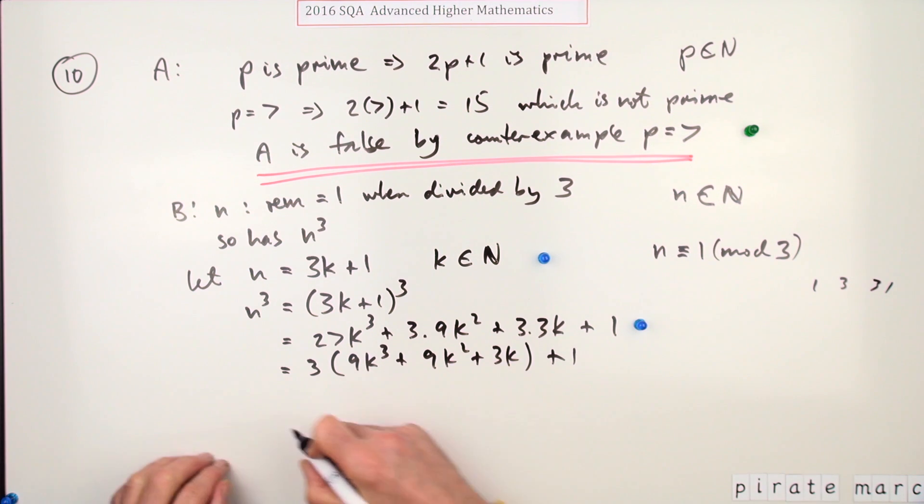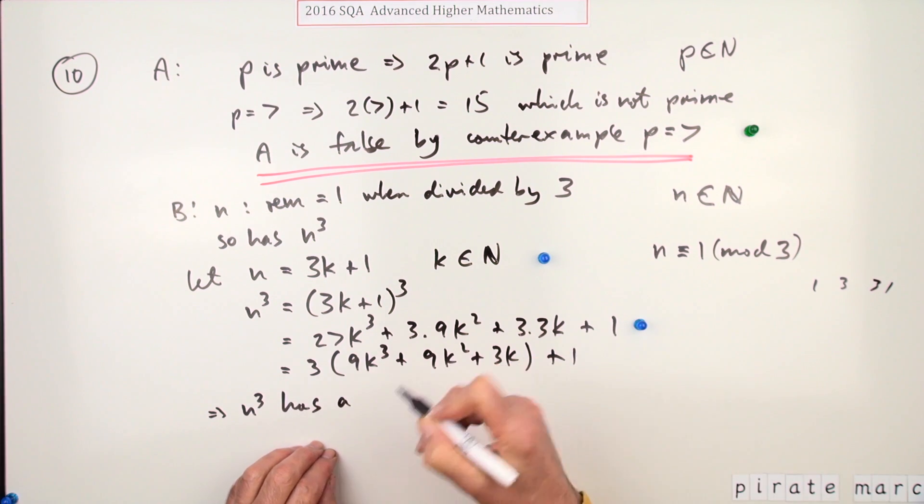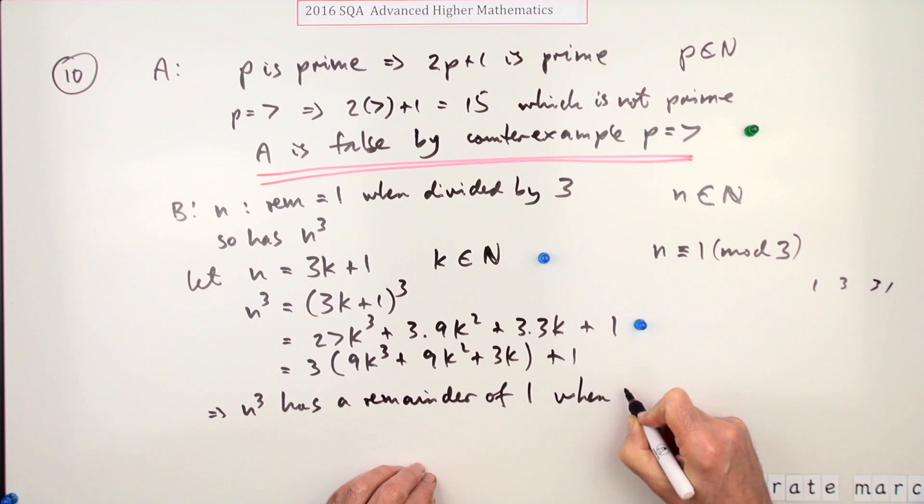Oh, which means n cubed has - ah, this is where that other piece of notation is so much easier - has a, instead of having to write 'has a remainder of one when divided by three,' which gets you the last mark.